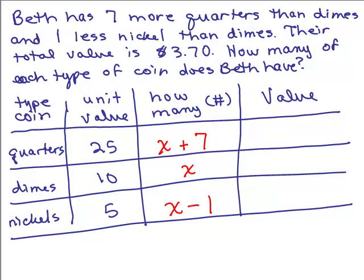All right, so how are we going to get the value? Remember we take the unit value times how many we have equals the total value over here. So for the quarters, it's going to be 25 times X plus seven, right? Twenty-five cents for each of those X plus seven quarters. Number of dimes will be 10X and the number of nickels will be five times X minus one.